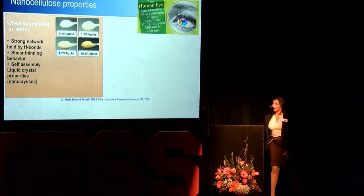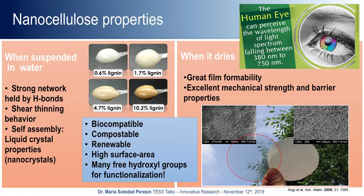When nanocellulose dries, it has very good film-forming ability — we can make a very nice film that is strong and has very good barrier properties, meaning we can use it to replace regular plastic. And because these fibers are so small and on the nanoscale, size matters — we cannot see the difference between the fibers and we can make a film that is transparent or translucent, depending on the process. Here I have a piece of paper and a piece of nanocellulose film to show you. On top of that, nanocellulose is from a renewable source, biodegradable or biocompostable, biocompatible, and has a very large surface area with functional hydroxyl groups ready for functionalization, opening many new applications beyond paper.